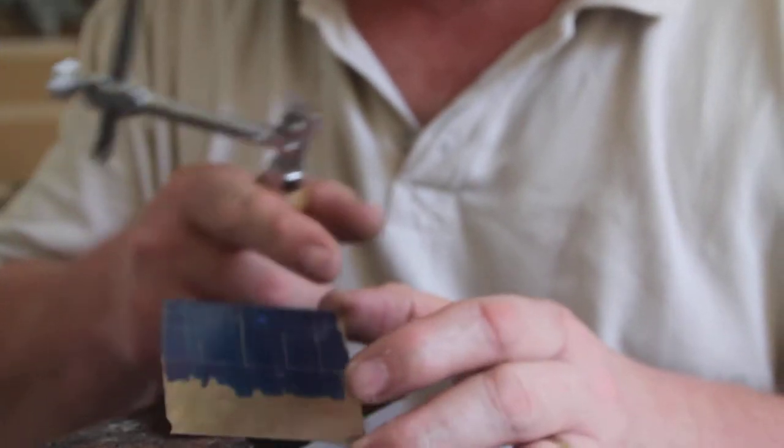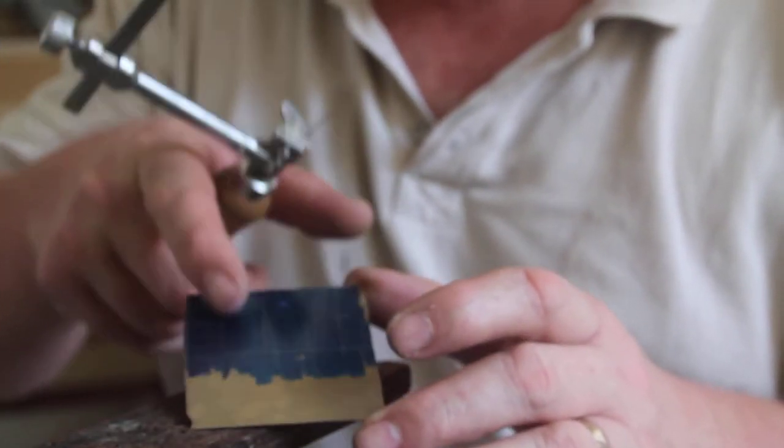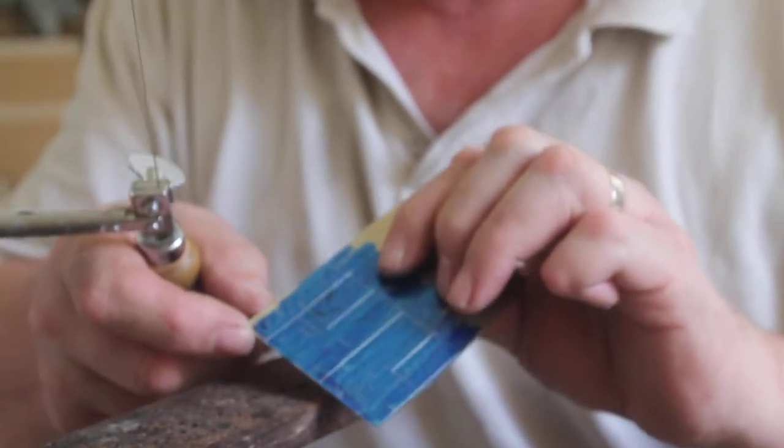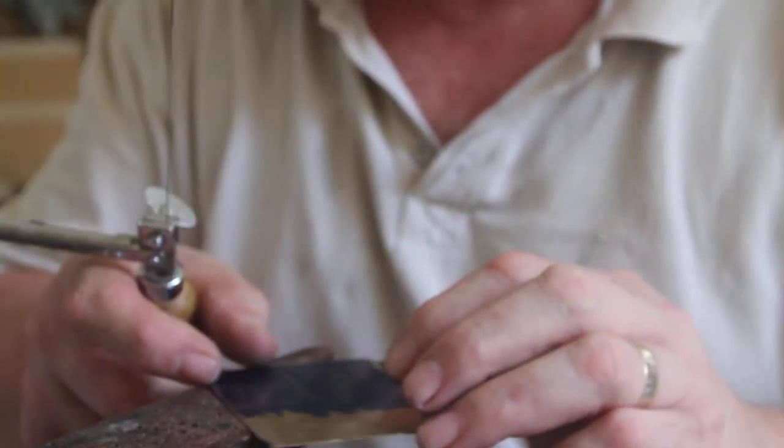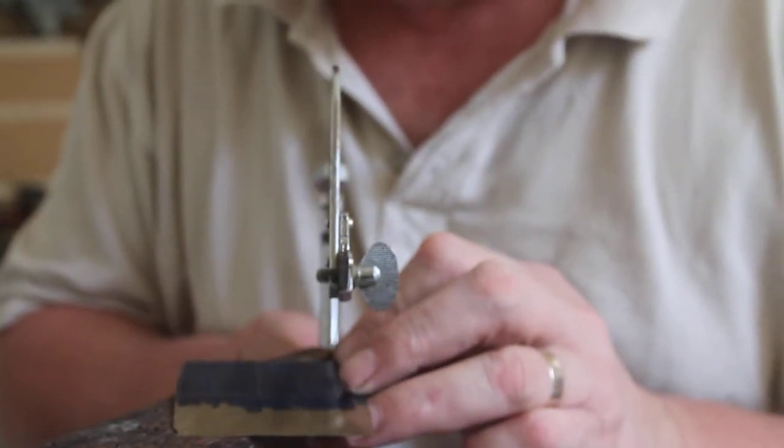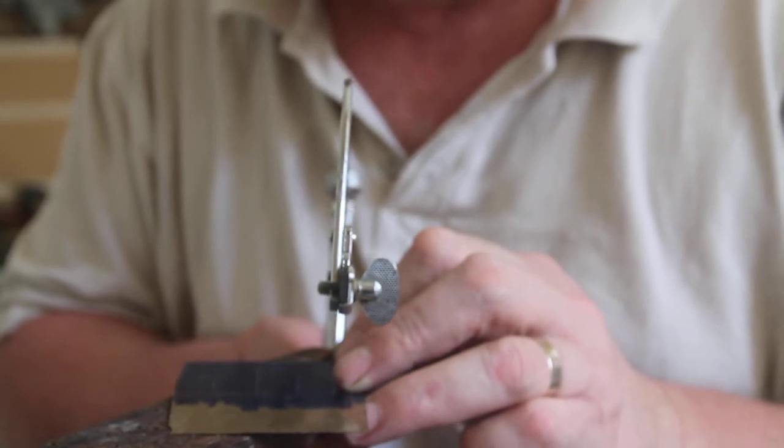I'm going to start up here because then when I work my way around, the bulk of the material is in my hand which makes it easier to work. We've got 20 thou material so it should cut quite nicely and it's nickel silver which also helps.